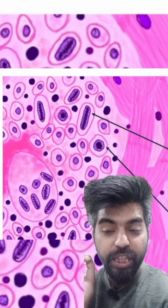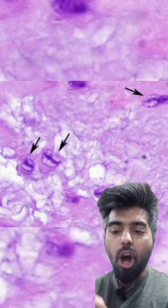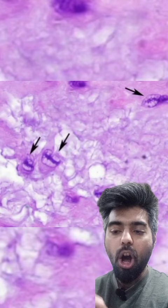In stage one, fibrinoid degeneration occurs. Stage two is called the intermediate stage, or the proliferative stage. It occurs within four to thirteen weeks of the illness, and Anitschkow cells are present. The third stage is the late stage, also called the healing or fibrosis stage.